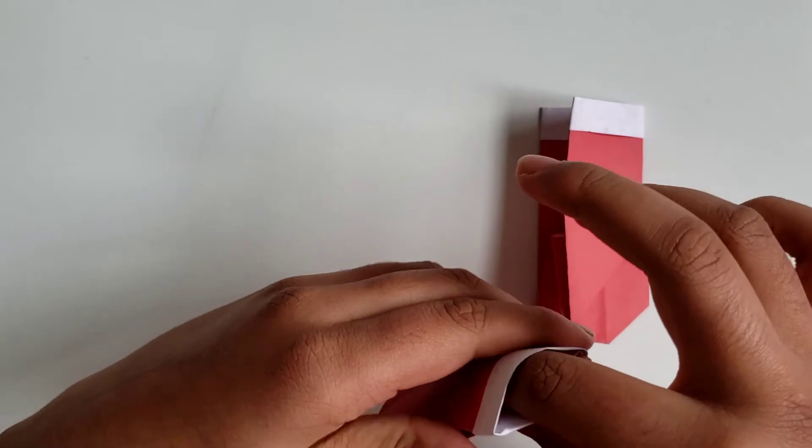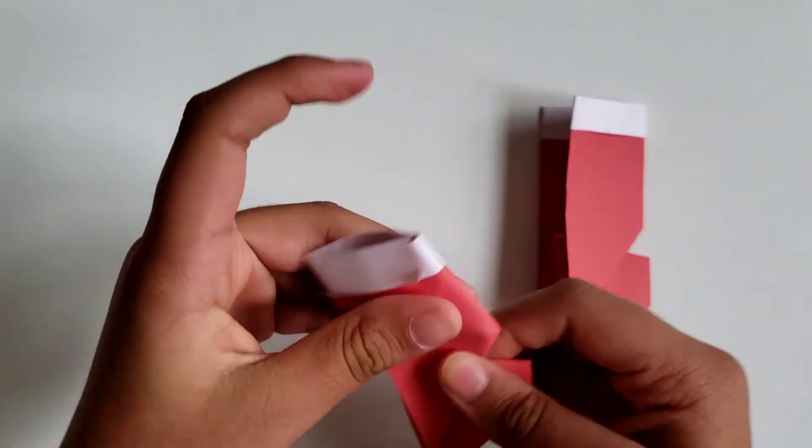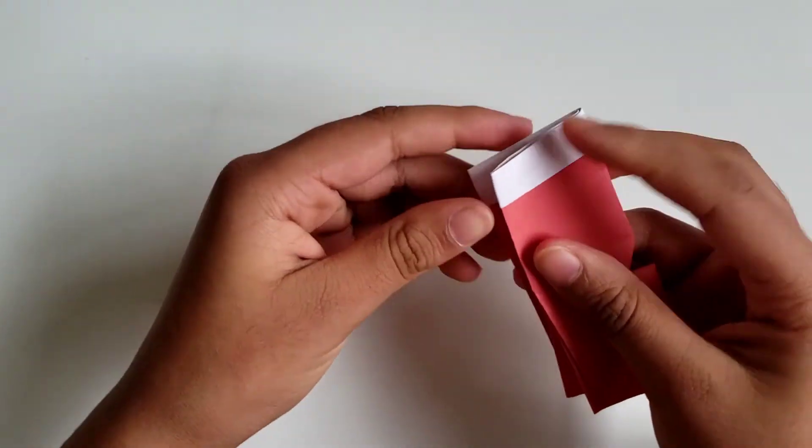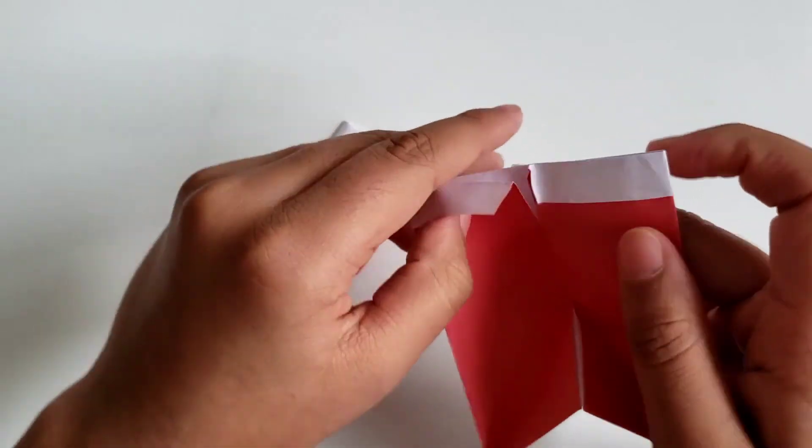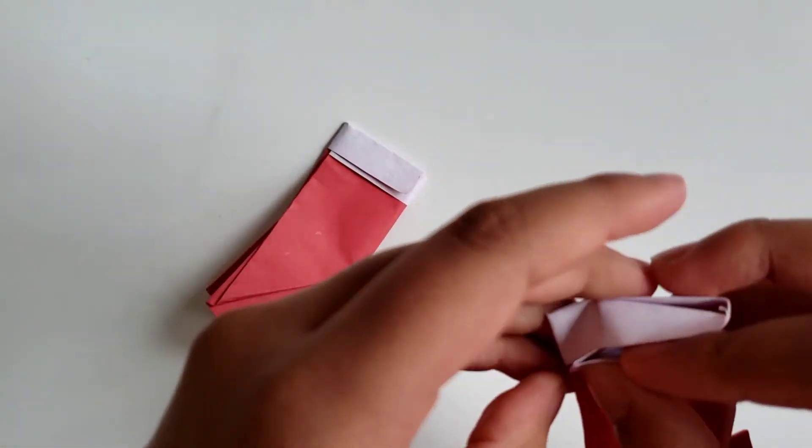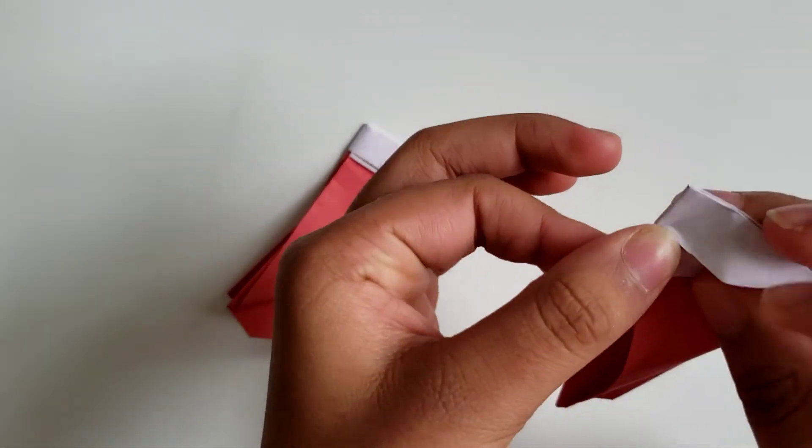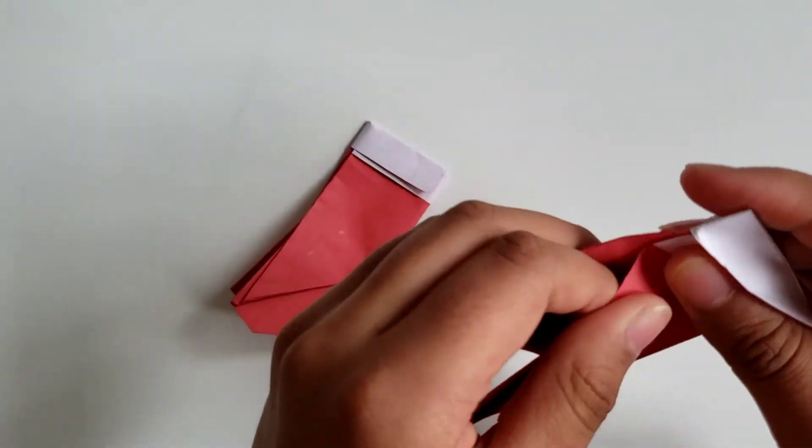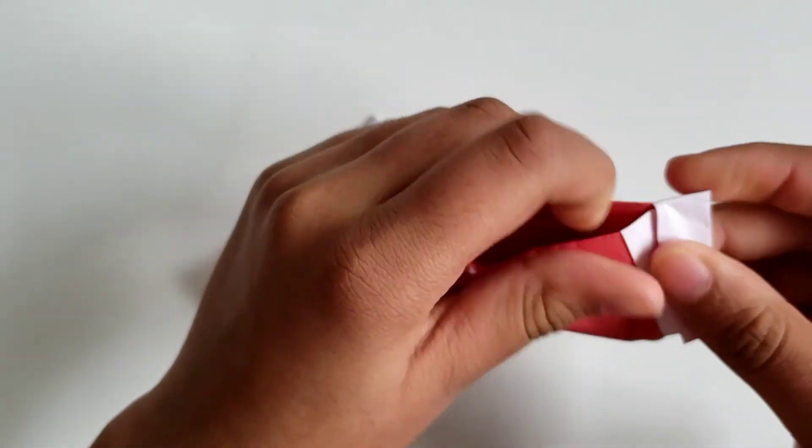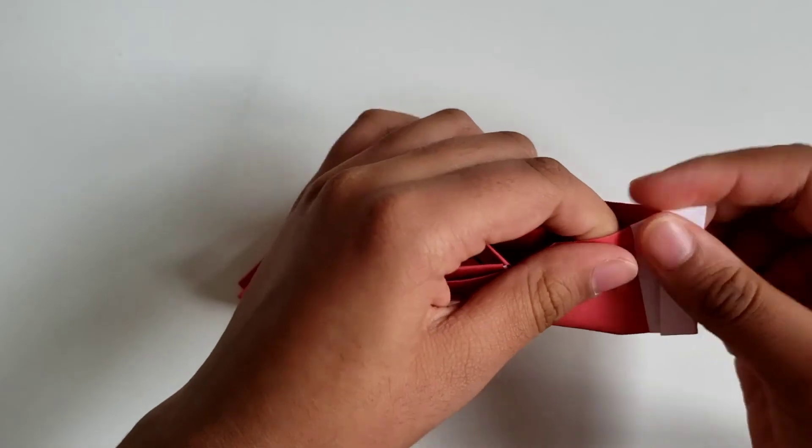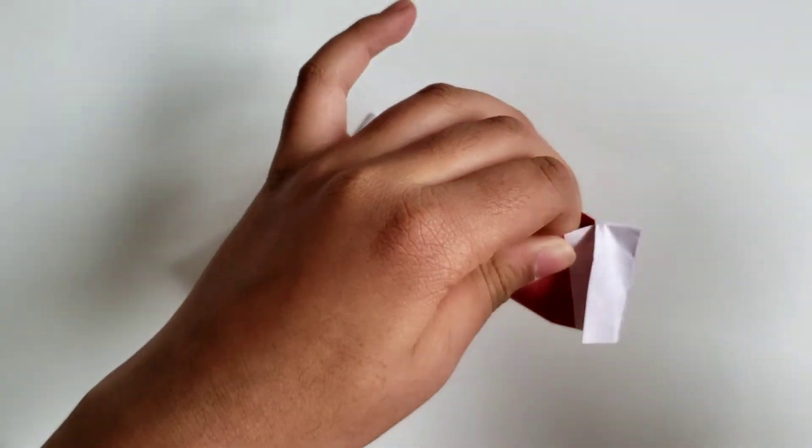So same thing with the other one - take this side, you can just kind of tuck it in. Be careful to not rip the paper, but tuck it in. And then that would be basically your last step, but this is optional if you want to do it or not.